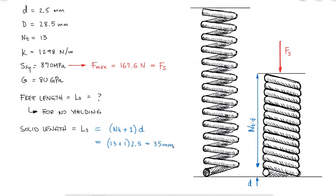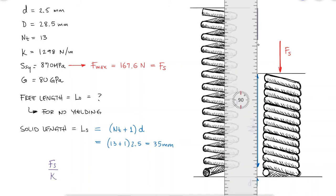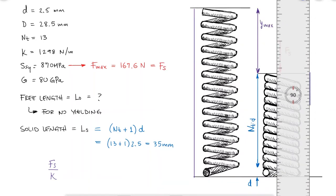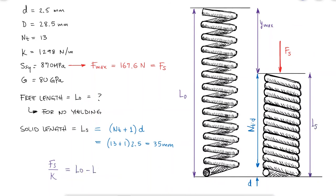It also means that this force fs divided by the spring constant k is the maximum deflection and therefore the difference between the free length and the solid length. Solving for the free length l0 and substituting the values, we find that the free length is equal to 164.1 millimeters.